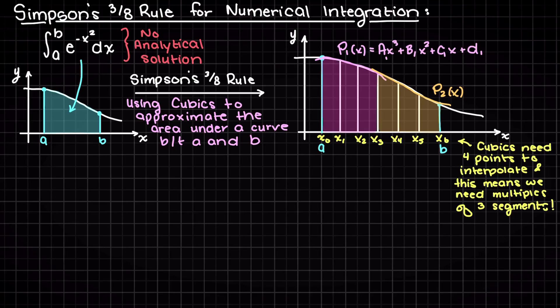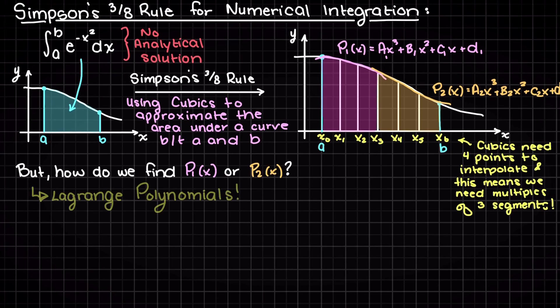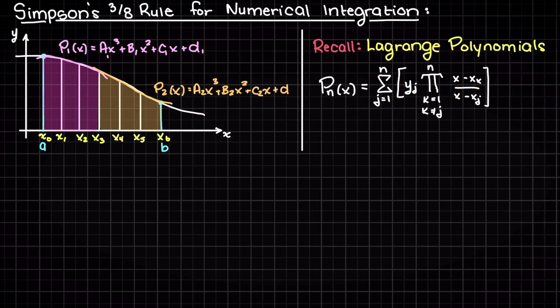Let's recall from our past numerical method videos that cubics are just third order polynomials which have a general formula of ax cubed plus bx squared plus cx plus d. Let's also recall that we learned in the past that we can use Lagrange polynomials to approximate functions to a given order.